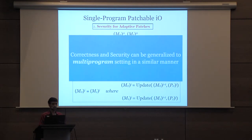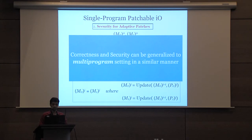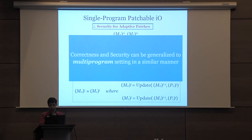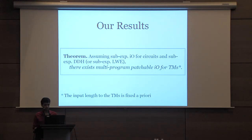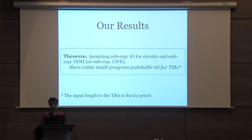I was only considering the single-program setting, but you can also consider the multiprogram setting where there are many Turing machines initially and you apply a sequence of patches to all of them. Now let me state our results. Assuming sub-exponential IO for circuits and sub-exponential DDH, we get multiprogram patchable IO for Turing machines.